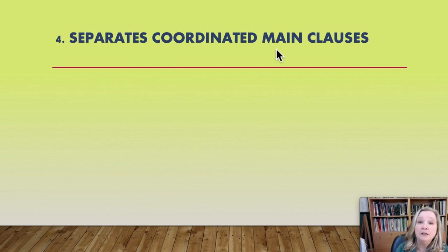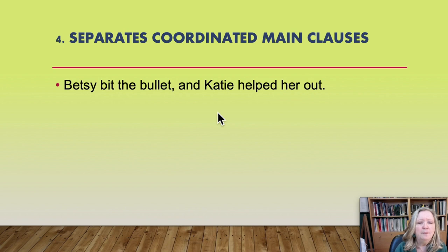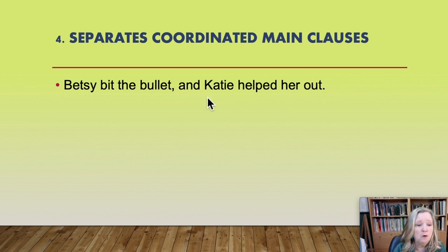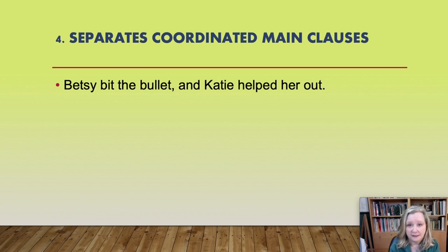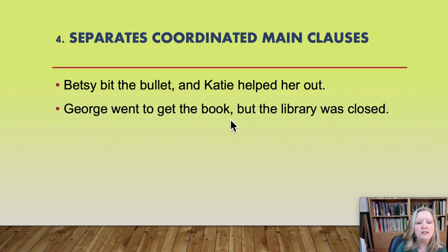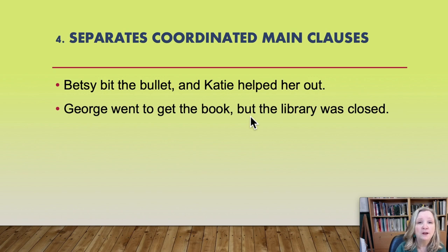A comma separates coordinated main clauses. Students have a little trouble with this. What makes clauses coordinated is that they each have a subject and a verb. Example: "Betsy bit the bullet, and Katie helped her out." Betsy is the subject, bit is the verb; Katie is the subject, helped is the verb — subject and verb on both sides, so you use a comma before the conjunction. Another example: "George went to get the book, but the library was closed." George/went and library/was closed — you need a comma before the conjunction "but."